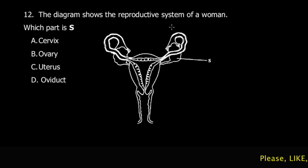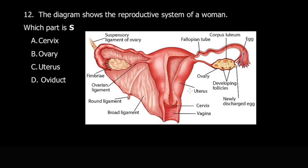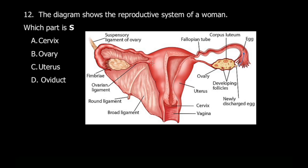The next question says the diagram shows the reproductive system of a woman. What part is S? This part here is obviously the ovary, you can see. Let me see if I can get another better diagram. This one is always the ovary, these two. This is a better diagram.